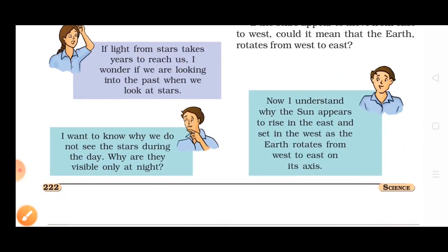If light from the stars takes years to reach us, it means we are looking into the past when we look at stars. The distances are so vast that it is very difficult to comprehend.